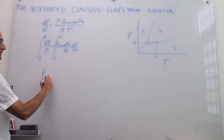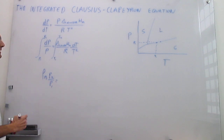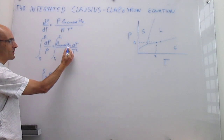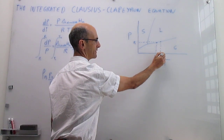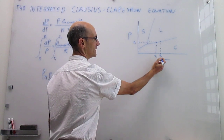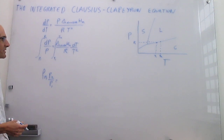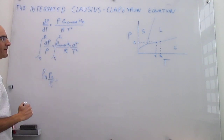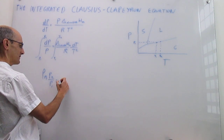The left-hand side integrates to simply the natural log of P2 over P1. On the right-hand side, we make the approximation that the enthalpy of the phase transition is temperature-independent — this is an approximation that is not always true, but it works reasonably well if the change in temperature from T1 to T2 is small enough. Factoring out ΔH and R from the integral, the integral of dT over T squared gives minus 1 over T.